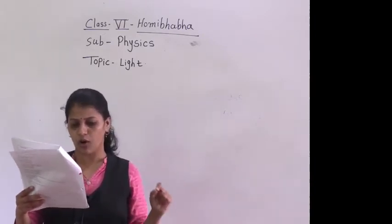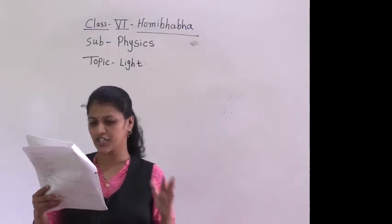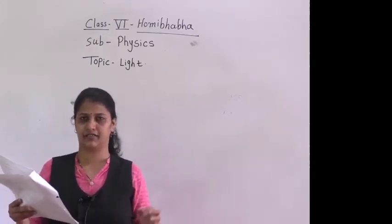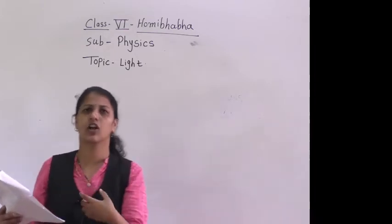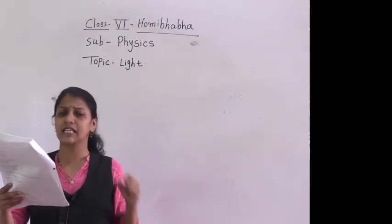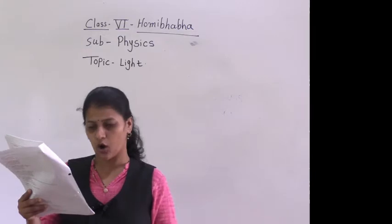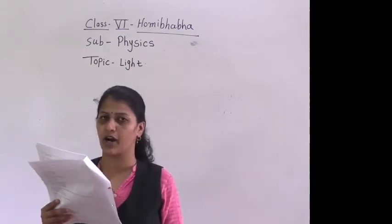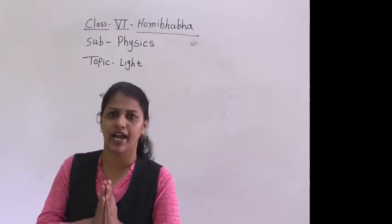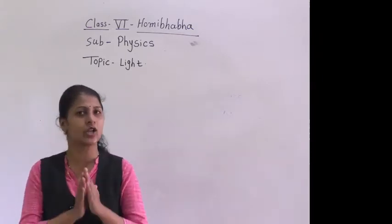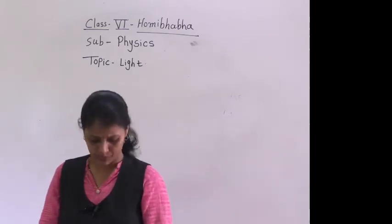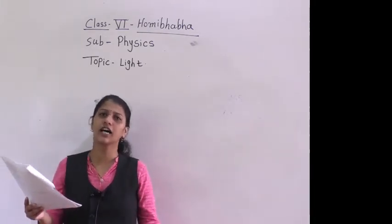Question twenty-two: when an object blocks the path of light, what shape of shadow is formed? When a particular object comes between the source of light, the shadow will be similar to the object. Since it is an opaque object, we can see the outline of the object. So the shadow forms the same shape as the particular object.